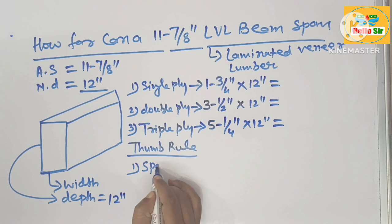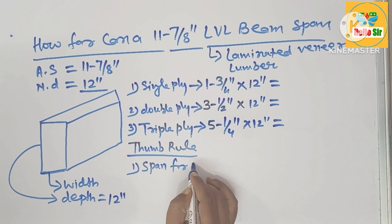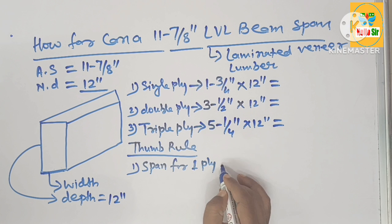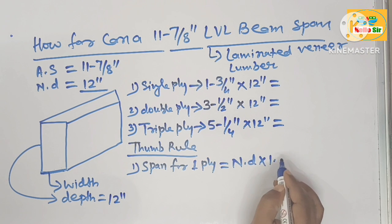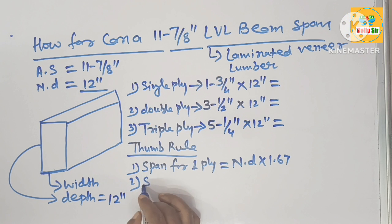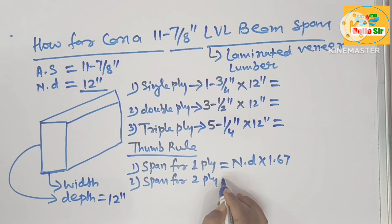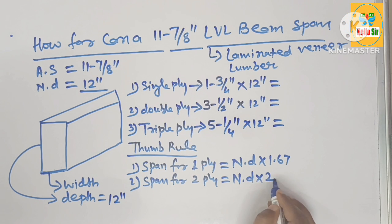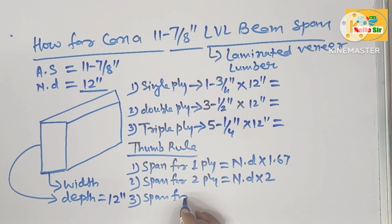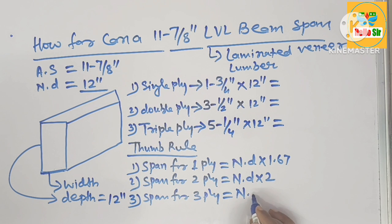What is the thumb rule to decide the span length of 12 inch LVL beam? The span length for single ply LVL beam equals nominal depth times 1.67. For double ply LVL beam, it equals nominal depth times 2. For triple ply LVL beam, it equals nominal depth times 2.5.